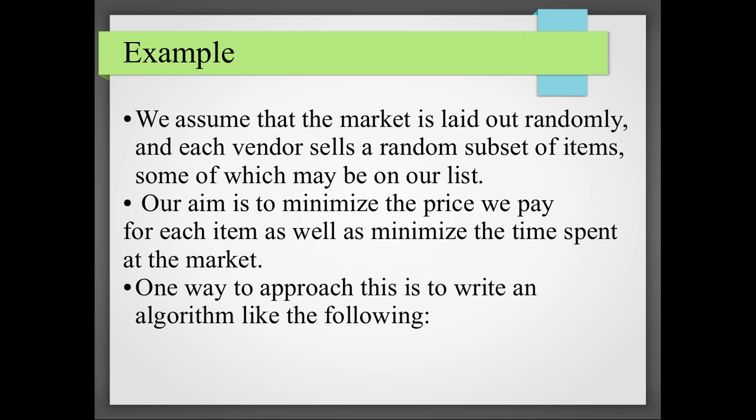For this, I have taken one small example, that market. Market is laid out randomly. Each vendor sells a random subset of items, some of which may be on your list. Our aim is to minimize the price, and the second is the time consumption. How much time you are spending there to buy a product.